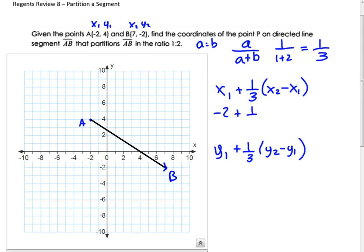So negative 2 plus 1 third, 7 minus negative 2. I just want to point out this 7 minus negative 2 bit. That's this distance right here, which is a change of 9. So this is really negative 2 plus one third of 9. One third of 9 is 3. Negative 2 plus 3 is 1.